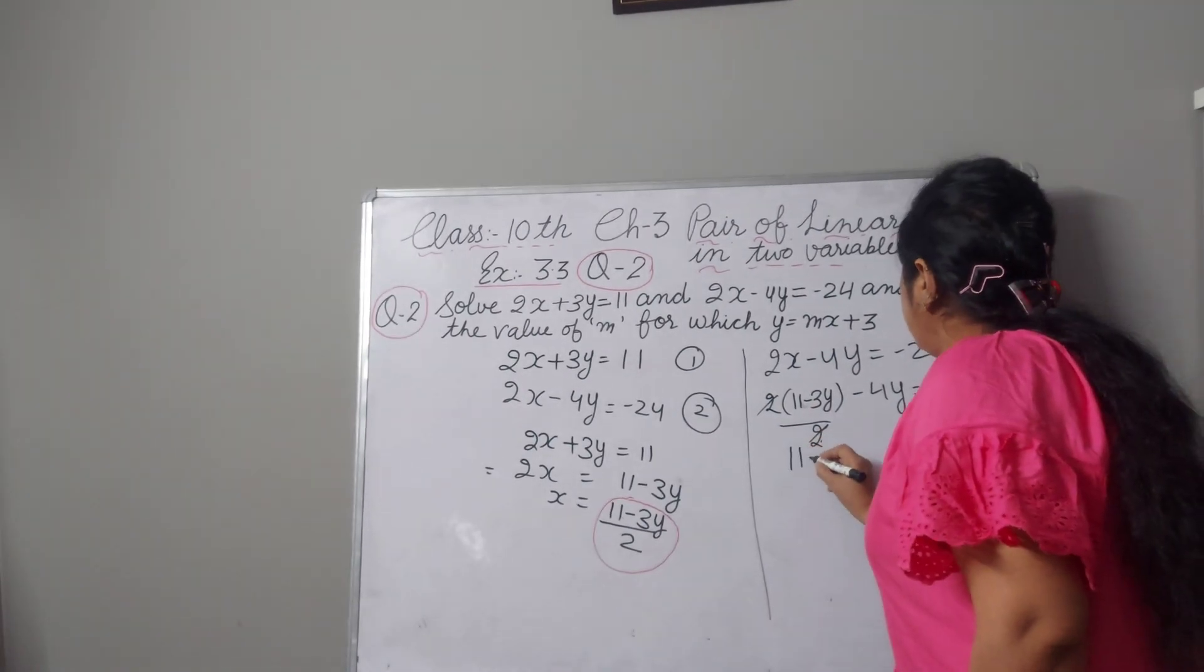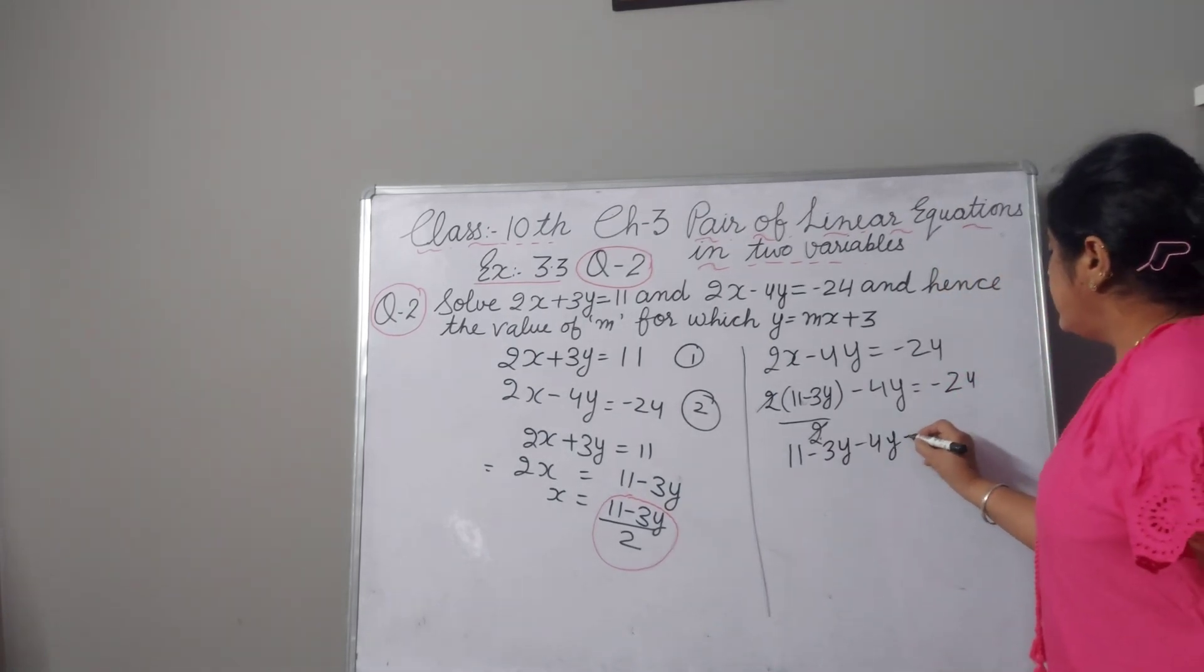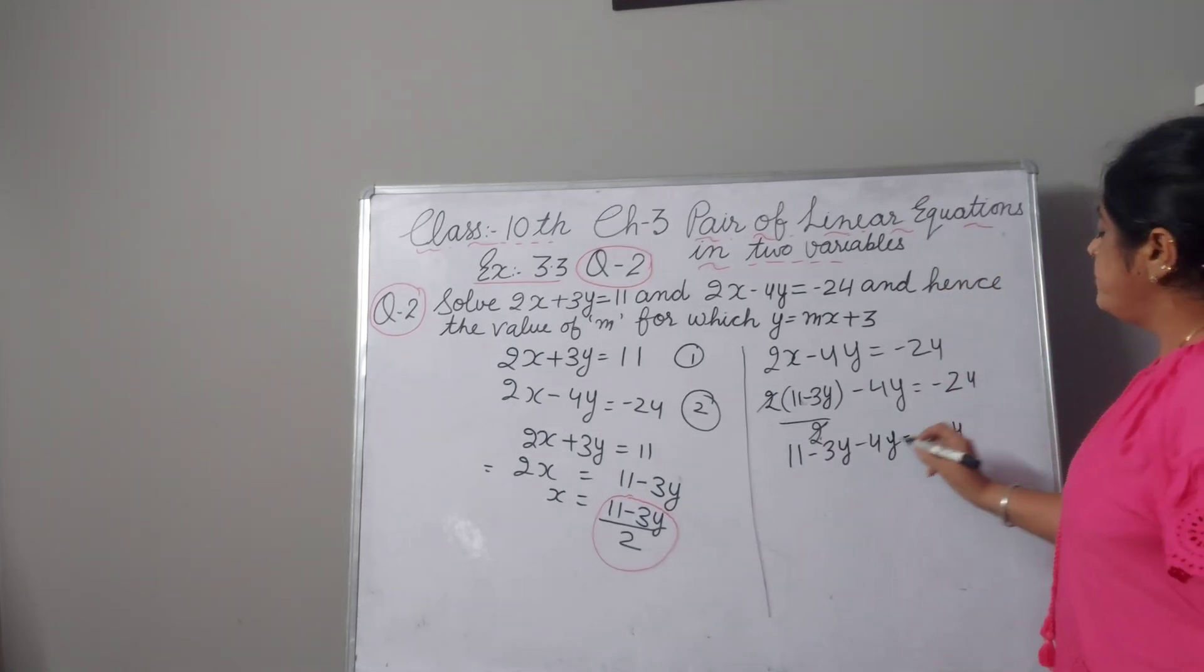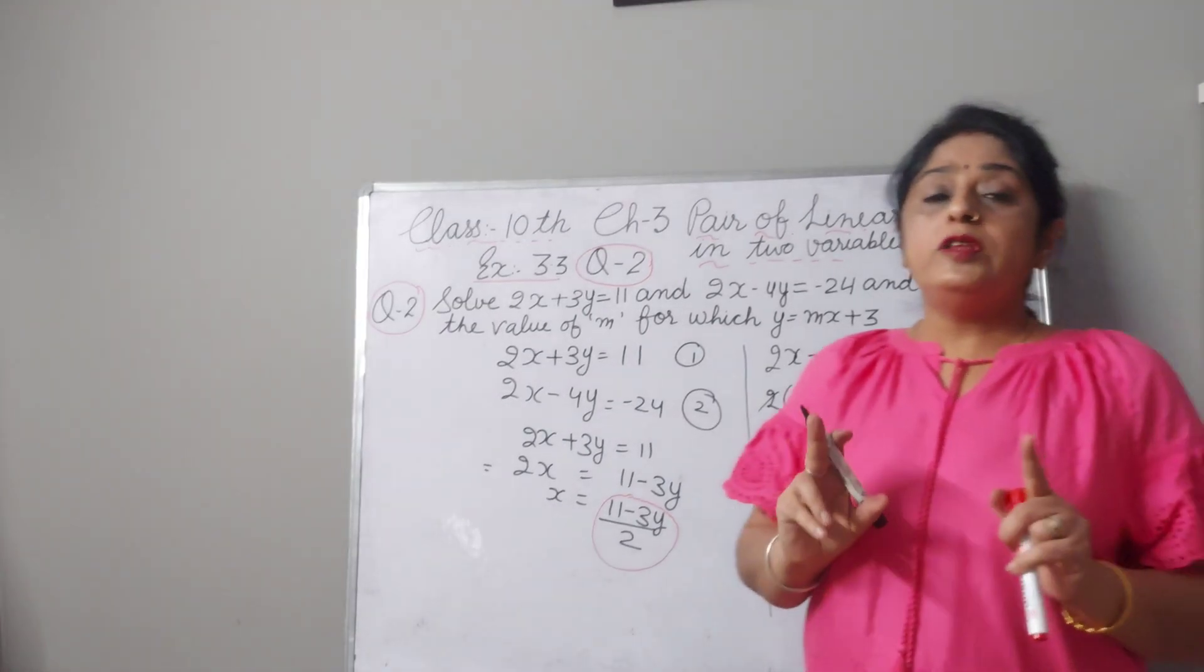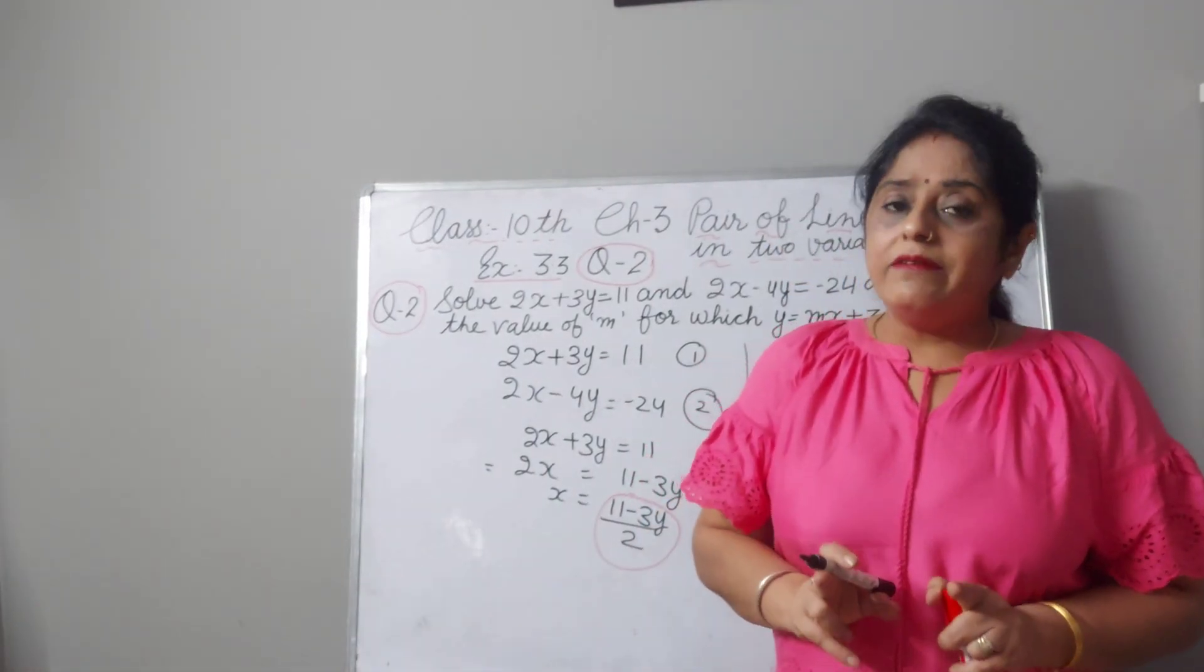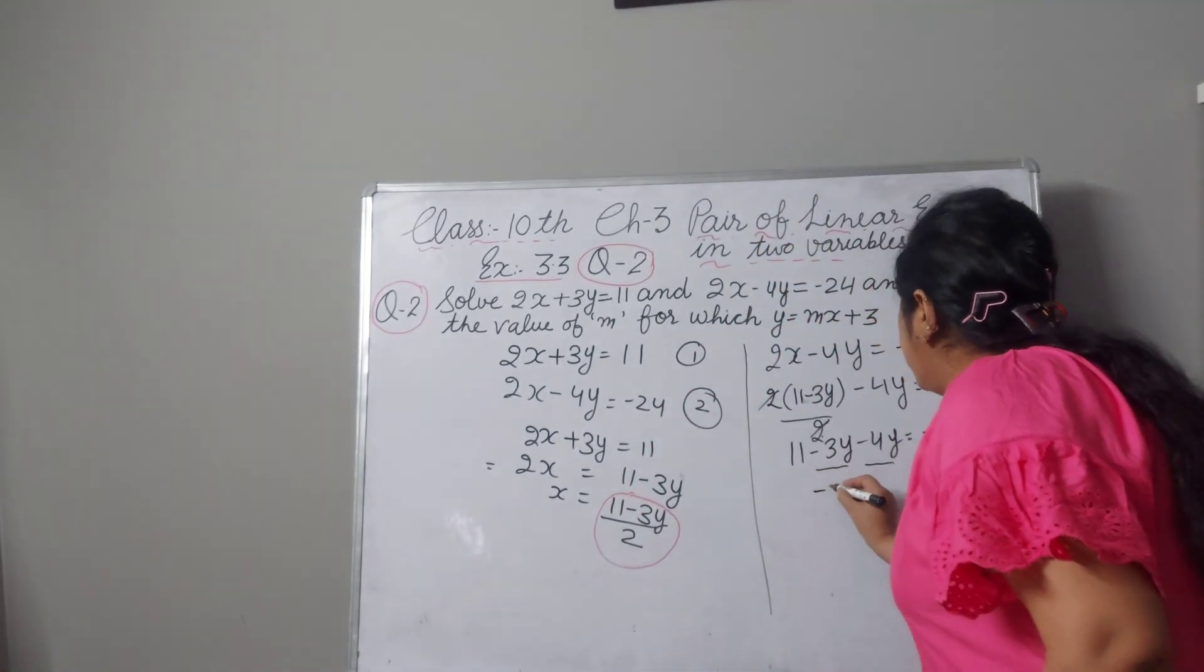This 2 and 2 will be cancelled because it is multiplied here, it is divided here. Now 11 minus 3y minus 4y equal to minus 24. Minus 3y and minus 4y both are like terms and both have negative sign. We will add but sign will be negative. Minus 7y.